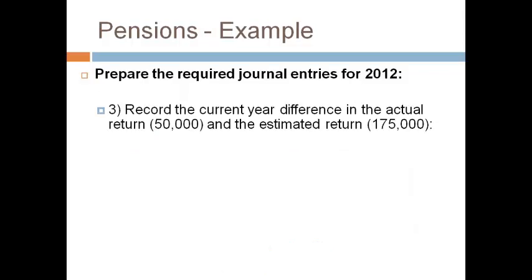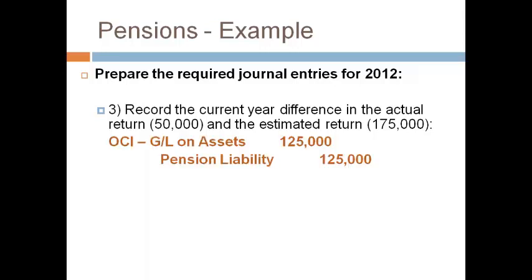The third entry is to record the difference between the estimated return in pension expense and the actual return that changed the pension trust fund assets. The actual return was lower than the estimate, so this is a loss. Record this loss to OCI with a debit and increase the pension liability. When the plan earns less, the company will have to contribute more.